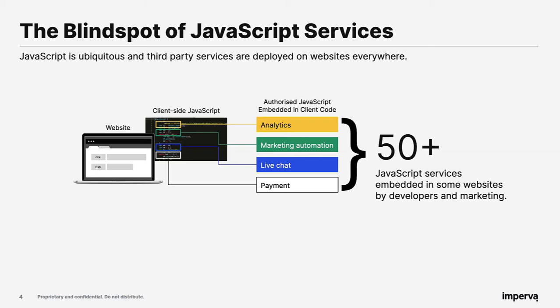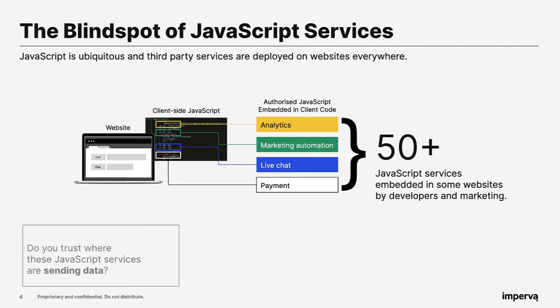When we audited the Imperva website, we found over 90 JavaScript services — websites can easily have 50-plus. The problem for the security team is that these services get added by developers or the marketing team, so security has no visibility into what was added, when it was added, whether it's been reviewed, or approved. That blind spot around JavaScript services is exactly the issue we want to address.